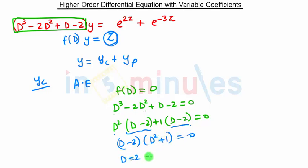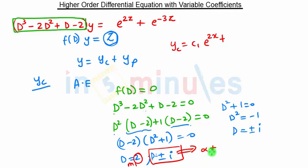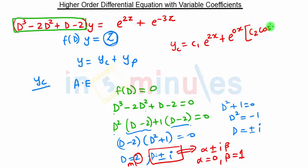Taking (D - 2) common: (D - 2)(D² + 1) = 0. One root is D = 2, and the other comes from D² + 1 = 0, giving D² = -1, so D = ±i. These are complex roots with α = 0 and β = 1. Therefore yc = C₁e^(2z) + e^(0·z)[C₂cos(z) + C₃sin(z)], which simplifies to C₁e^(2z) + C₂cos(z) + C₃sin(z).